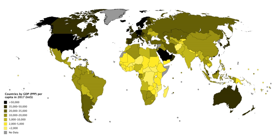Even GDP per capita measures may have the same downside if inequality is high. For example, South Africa during apartheid ranked high in terms of GDP per capita, but the benefits of this immense wealth and income were not shared equally among the country. GDP does not take into account the value of household and other unpaid work. Some, including Martha Nussbaum, argue that this value should be included in measuring GDP, as household labor is largely a substitute for goods and services that would otherwise be purchased for value. Under conservative estimates, the value of unpaid labor in Australia has been calculated to be over 50 percent of the country's GDP.